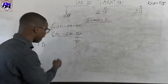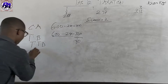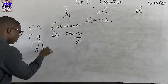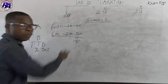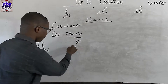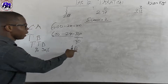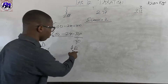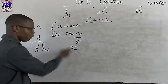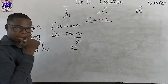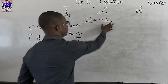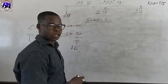We charge our 30% rate on the temporary difference of 40, and this gives us $12. So our deferred tax in year one is $12 — this is a deferred tax liability.